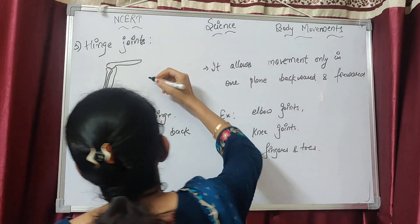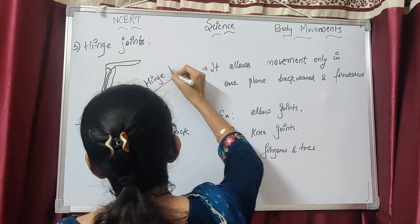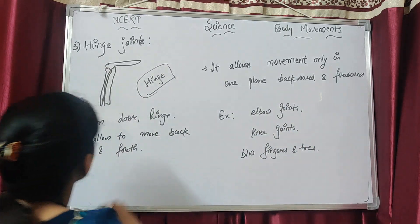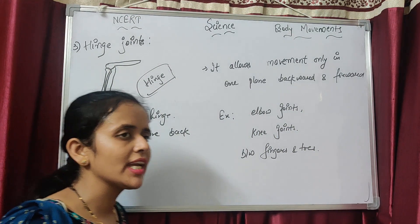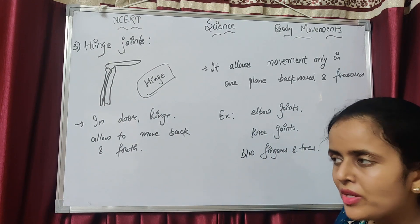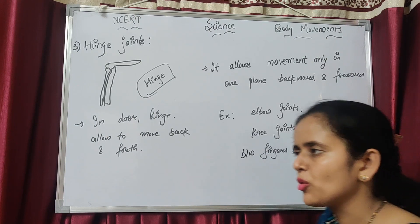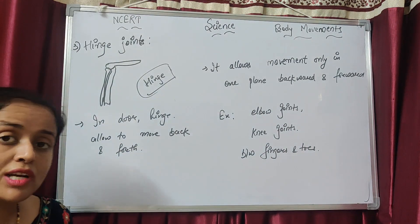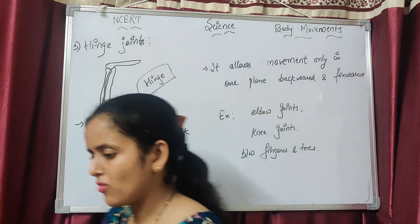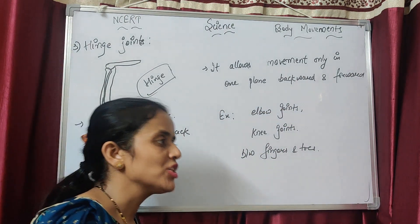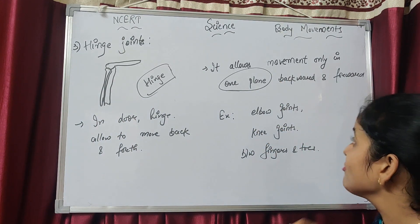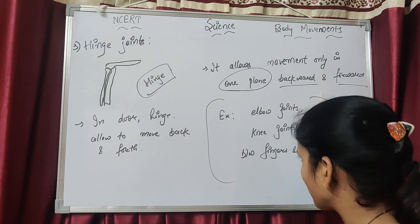The next joint is the hinge joint. Where is the hinge joint found in our body? It is found in the knee, elbow, and between the fingers and toes. The main feature of the hinge joint is that it allows movement only in one plane — back and forth. Think of the hinge on a door: if you open and close the door repeatedly, the hinge allows movement only back and forth. The hinge joint in our body works the same way.